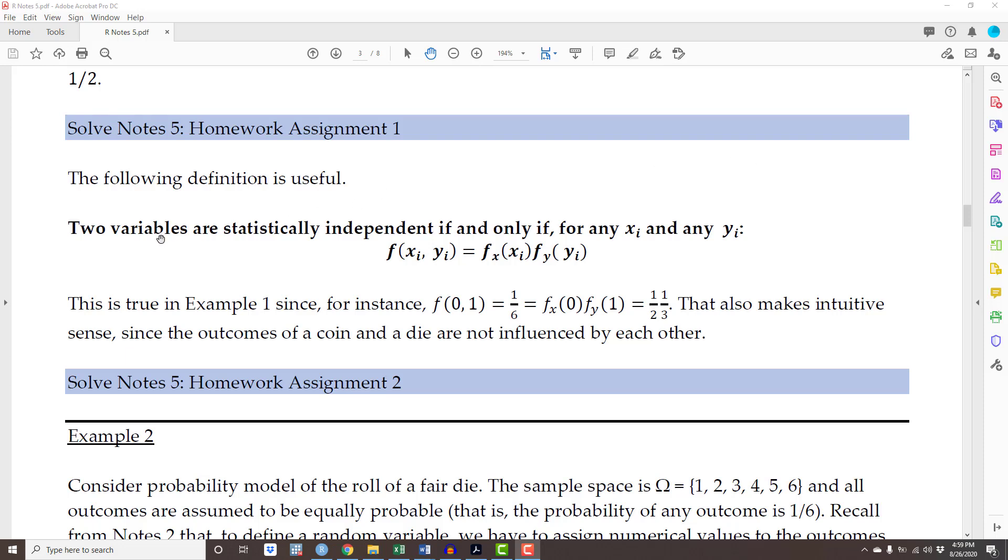The next step is to define independence among variables. Two variables are statistically independent if and only if, for any value of x and any value of y, the joint density of xi and yi equals the marginal density of xi times the marginal density of yi.